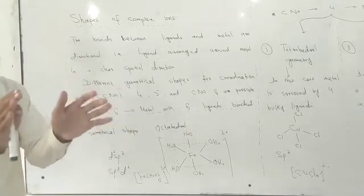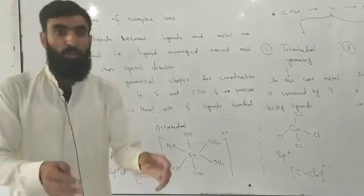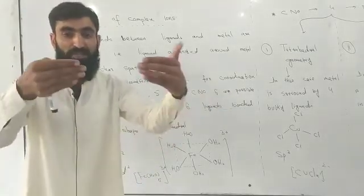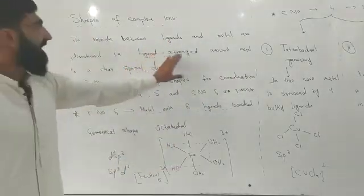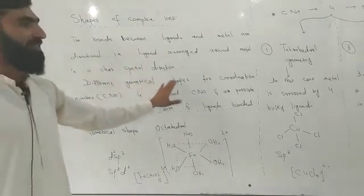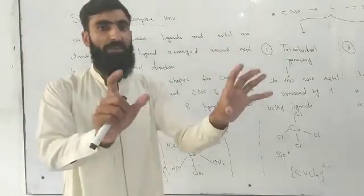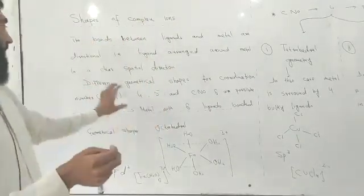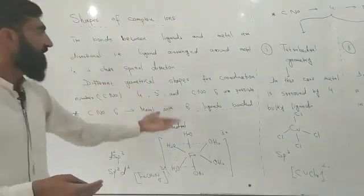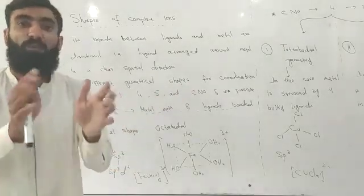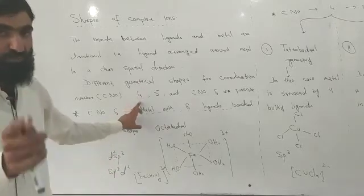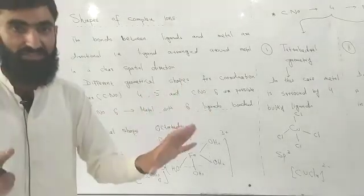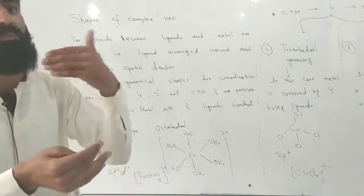Since the ligand bonds are directional, they point in specific directions. Different geometrical shapes make different coordination compounds. So if you have coordination number 4, coordination number 5, or coordination number 6, each gives a different shape to the coordination compound, which we will see in this lecture.